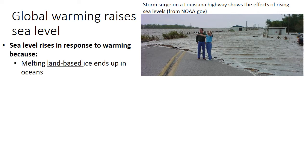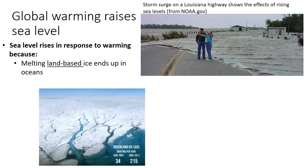First, land-based ice ends up melting and runs off into the ocean, so there's an addition of water from land-based ice. Sea-based ice isn't going to increase sea level because that water is already there, but ice on land will lead to an increase. We're already seeing major losses of ice on land, such as in Greenland, with a huge increase in the rate of ice loss contributing to sea level rise, which we can already observe.